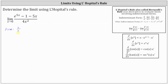L'Hôpital's rule states that the limit as x approaches c of f(x) divided by g(x) equals the limit as x approaches c of f prime of x divided by g prime of x. This means our limit equals the limit as x approaches 0 of the derivative of the numerator divided by the derivative of the denominator.